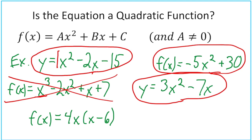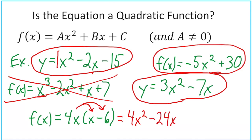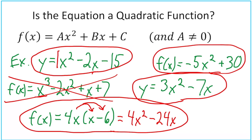Last one: f(x) = 4x(x - 6). We don't see an x² here — we see two x's. Using the distributive property, 4x times x is 4x², and 4x times negative 6 is -24x. So that is quadratic. Sometimes you have to simplify to see if it fits the form ax² + bx + c.